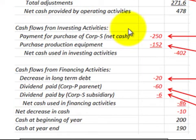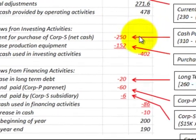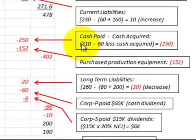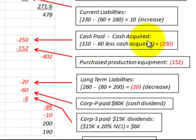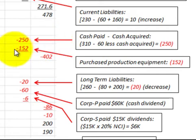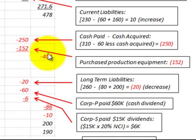Moving down to cash flows for investing activities: we had a payment for the purchase of the subsidiary of $310,000. We subtract the cash received from the subsidiary's balance sheet of $60,000, giving a net cash payment of $250,000 for the parent to acquire Corporation S. They also purchased equipment for $152,000. So the net cash used in investing activities is $402,000.